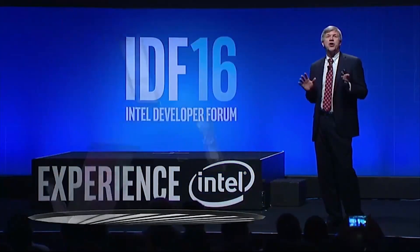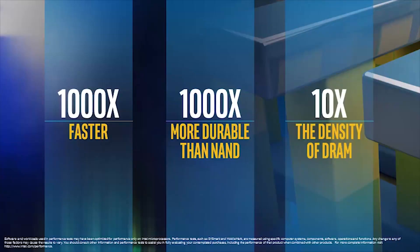Now I'd like to talk about a completely new type of non-volatile technology that is a breakthrough in speed and performance. I'm talking about 3D crosspoint technology. 3D crosspoint technology is up to 1,000 times faster and 1,000 times more durable than NAND, while delivering up to 10 times higher density than DRAM. But unlike DRAM, 3D crosspoint is non-volatile, so the data remains intact even when the device loses power.